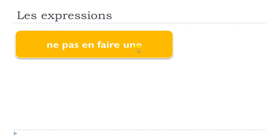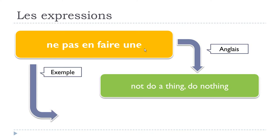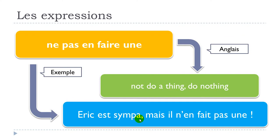Here is the translation in English. Let's see one example: Eric est sympa mais il n'en fait pas une — Eric is nice but he doesn't make a big deal out of it.